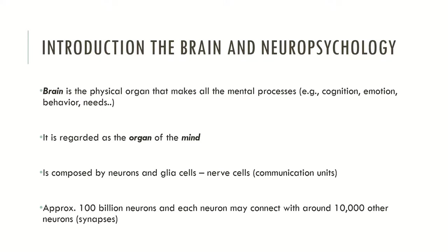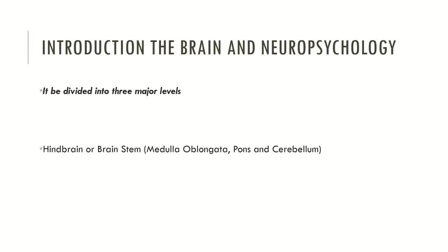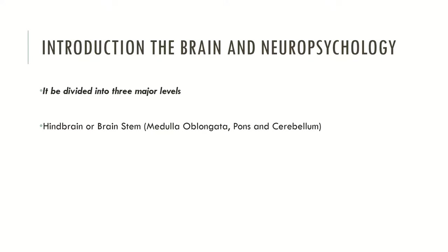The brain has approximately 100 billion neurons, and each neuron may connect with around 10,000 other neurons. Neurons are connected by synapses, which we'll cover in the future. The brain is divided into three major levels: the hindbrain or brainstem, which contains the medulla oblongata, pons, and cerebellum; the midbrain, which contains the substantia nigra and the superior and inferior colliculi; and the forebrain.